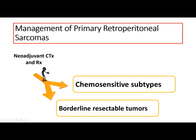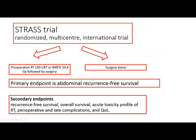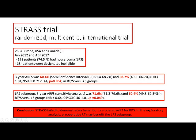The second lesson: do we need preoperative radiotherapy routinely in all cases of retroperitoneal sarcoma? The answer from the STRASS trial was no. This randomized multicentric trial divided patients into preoperative radiotherapy followed by surgery versus surgery alone, with primary endpoint of recurrence-free survival. The three-year recurrence-free survival was comparable between the two groups with an insignificant p-value. The conclusion was that STRASS failed to demonstrate benefit for preoperative radiotherapy, though exploratory analysis suggested it may benefit some liposarcomas.